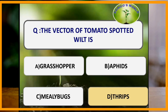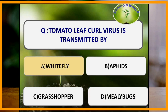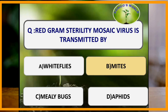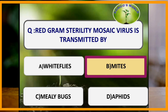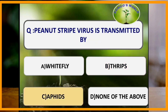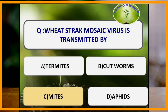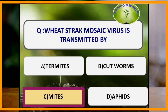The vector of tomato spotted wilt is thrips. Tomato leaf curl virus is transmitted by whitefly. Virus transmission by mealybugs is semi-persistent. Red gram sterility mosaic virus is transmitted by mites. Peanut stripe virus is transmitted by aphids. Wheat streak mosaic virus is transmitted by mites.